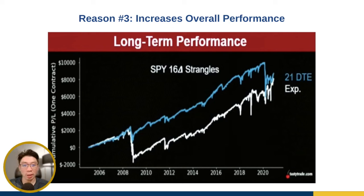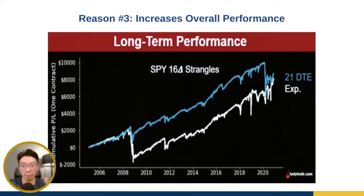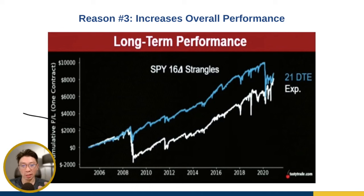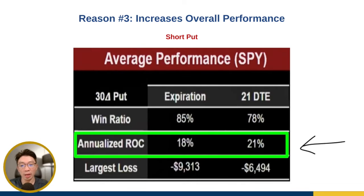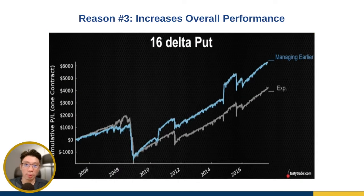Although not that much difference at the end — according to the Tasty Trade team one trade so happened to be exited at its worst loss before the market eventually recovered in 2020. But looking all the way back to 2008, if you hold to expiration you actually have a much bigger drawdown, which is pretty scary, whereas exiting at 21 DTE gives you a much lower P&L volatility. For the short put, the annualized ROC is 21% when you exit at 21 DTE and only 18% if you hold to expiration. The long-term performance of the short put also confirms 21 DTE does better.